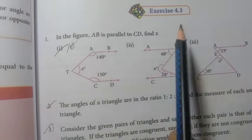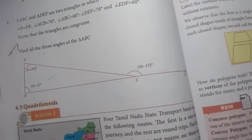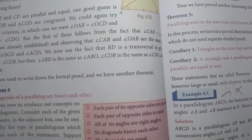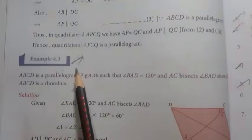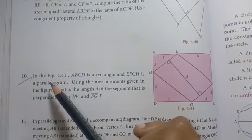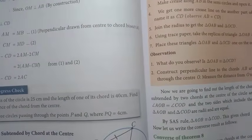Chapter 4: Geometry. Go to Exercise 4.1, page number 143: 1st, 2nd, 3rd, 4th, and 5th. Then page number 155, Example 4.1 important, Example 4.3 important. Exercise 4.2: 1st, 2nd, 4th, and 5th important.